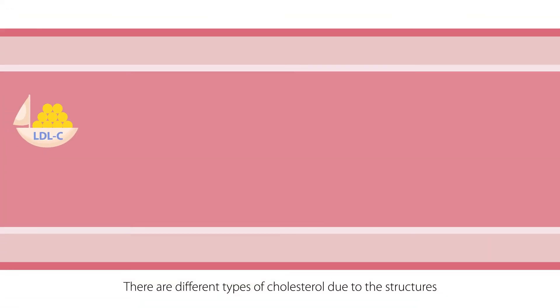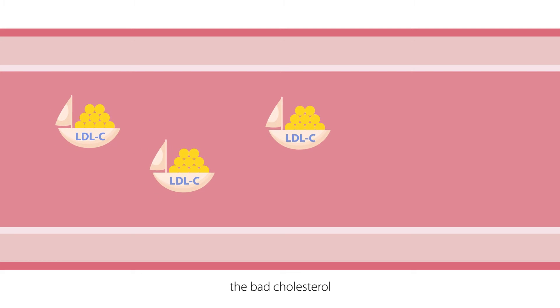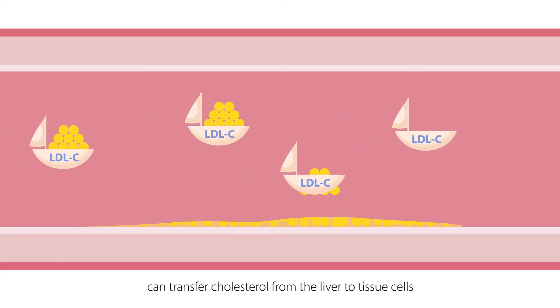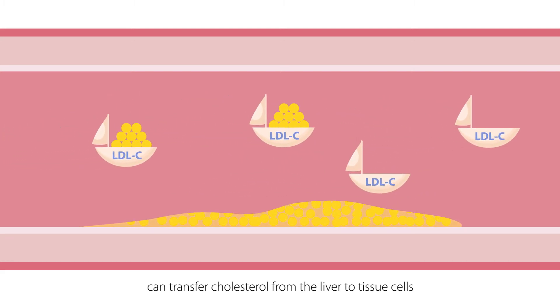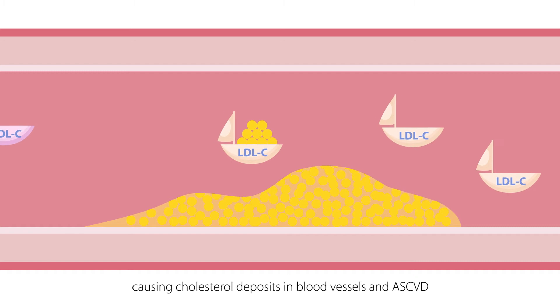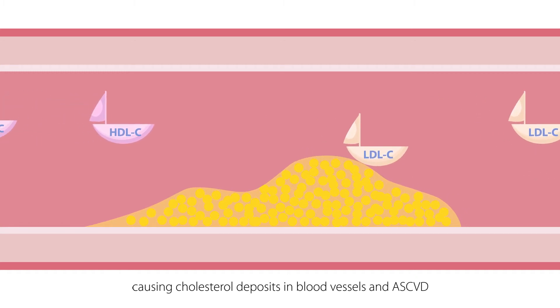There are different types of cholesterol due to their structures. LDL-C, the bad cholesterol, can transfer cholesterol from the liver to tissue cells, causing cholesterol deposits in blood vessels and ASCVD.